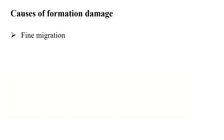Looking at the causes of formation damage: we have fine migration. When there is a drawdown at a higher rate, as the hydrocarbon is moving from the reservoir, it carries fine particles of sand, fine particles of silt, and at times fine particles of clay. When it gets closer to the wellbore and the flow rate decreases, these particles are deposited within the pore spaces of the formation closer to the wellbore. As a result, that particular zone becomes damaged and blocked, thereby reducing the permeability.